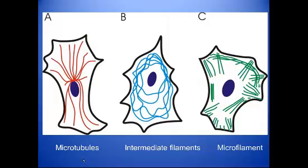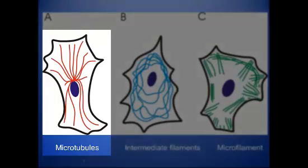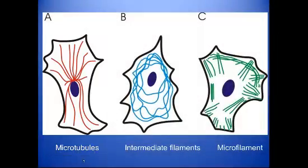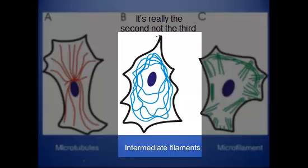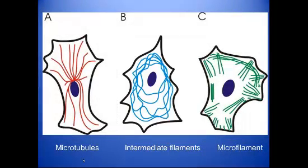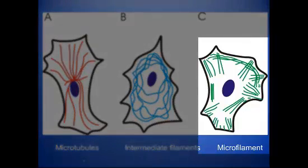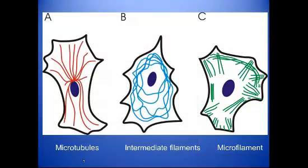This picture shows the distribution of those three types of filaments in cells, each of them isolated. The first, the microtubule, is distributed starting from the nucleus — these tubules originate from a structure near the nucleus. The intermediate filaments in blue kind of wrap themselves around the nucleus and help to hold it in place. The actin or microfilaments are found around the edges of the cell because they are used to move the cell at the edge.